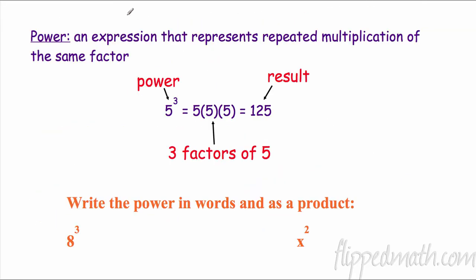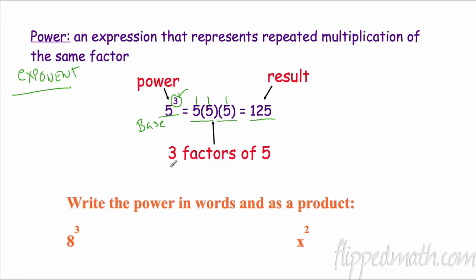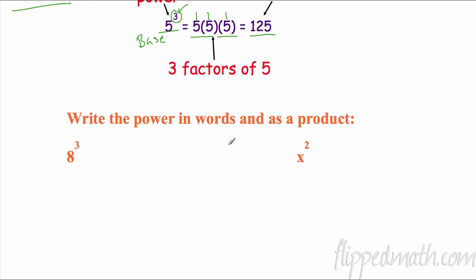Now we have powers. A power is an expression that represents repeated multiplication of the same factor — also known as exponents. So we have five to the third power. This is the power; this is what we call the base. The base is the number we repeatedly multiply — I'm multiplying five this many times: one, two, three times. So five times five is 25, multiply that by five, and I get 125. I have three factors of five. When I want to write the power in words and as a product, I have eight to the third power — eight times eight times eight. When we have a third power, it's called cubed, so you may write eight cubed.